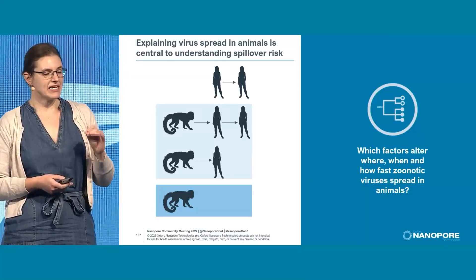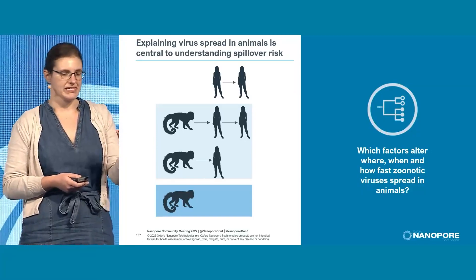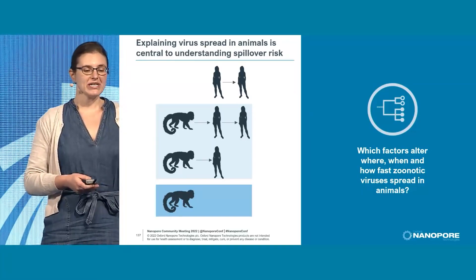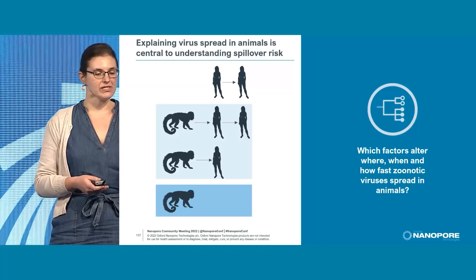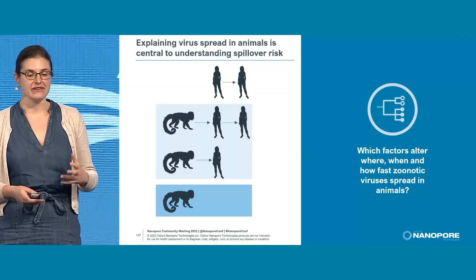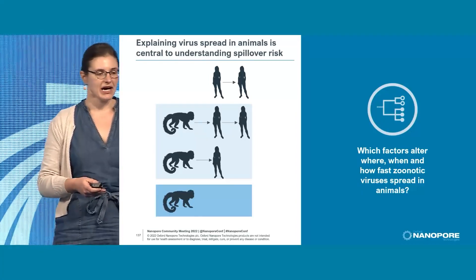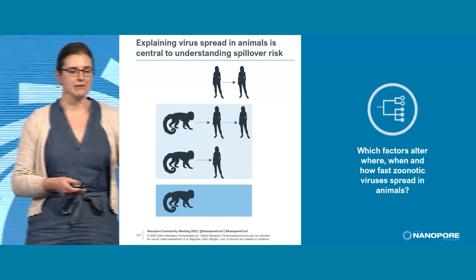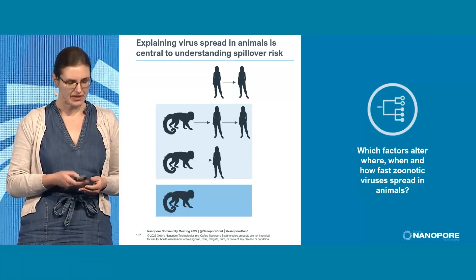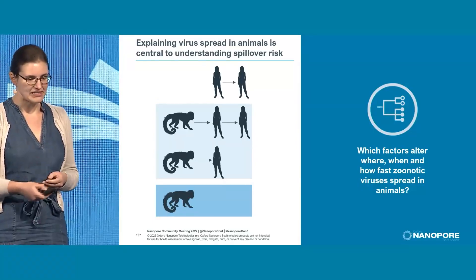In an ideal world, what we really want to be doing is reducing the chance of these spillovers. And if we can't do that, intervening at an early enough stage in that process of spillover to interrupt transmission chains between humans before they can become explosive outbreaks like the recent pandemic. We want to know which factors alter where, when, and how fast zoonotic viruses spread in animals and in the humans that experience these immediate spillovers.